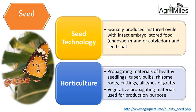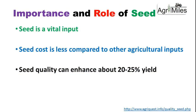From a horticultural perspective, seed refers to the propagating material of healthy seedlings, which may originate from seeds or from tubers, bulbs, rhizomes, roots, cuttings, or various types of grafts. In general, vegetative propagating material used for production purposes is also considered seed from the horticultural perspective.